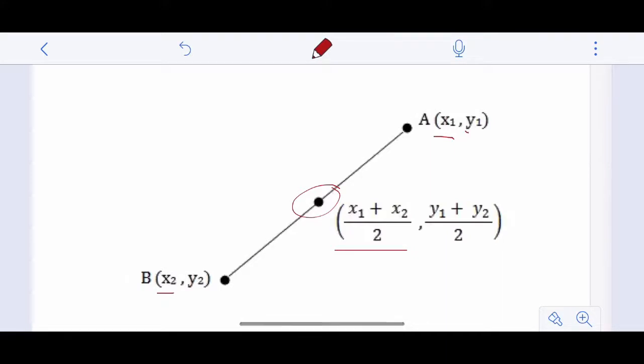And the same thing for y's. y1 plus y2, it doesn't matter what point you pick is y1 or y2, divide it by 2, here's the midpoint of y. So oftentimes the ACT, you only have to do the x or the y coordinate because that's all the answers will show.